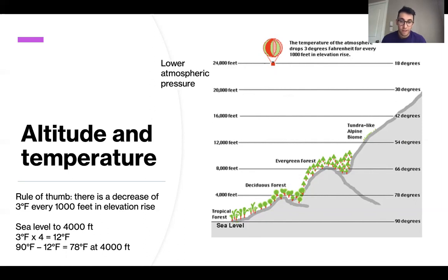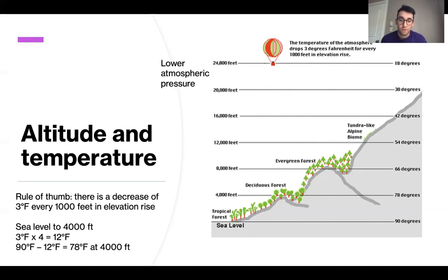So if we compare sea level to 4,000 feet, that is a 12 degree Fahrenheit difference. If sea level is 90 degrees, then at 4,000 feet it should be around 78 degrees. Now this is a simplified rule, but it's a concept that can be applied to the entire Earth.